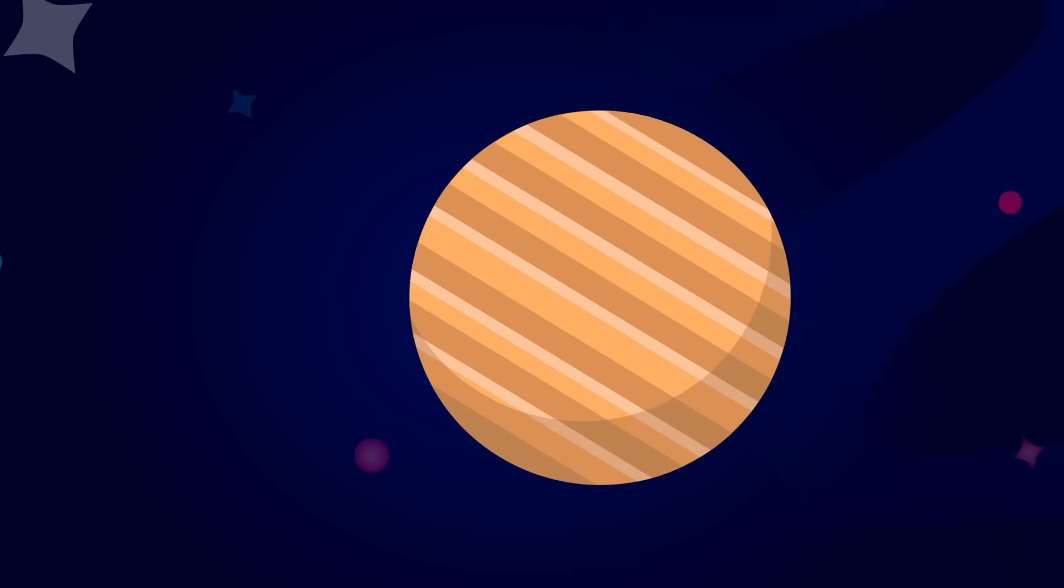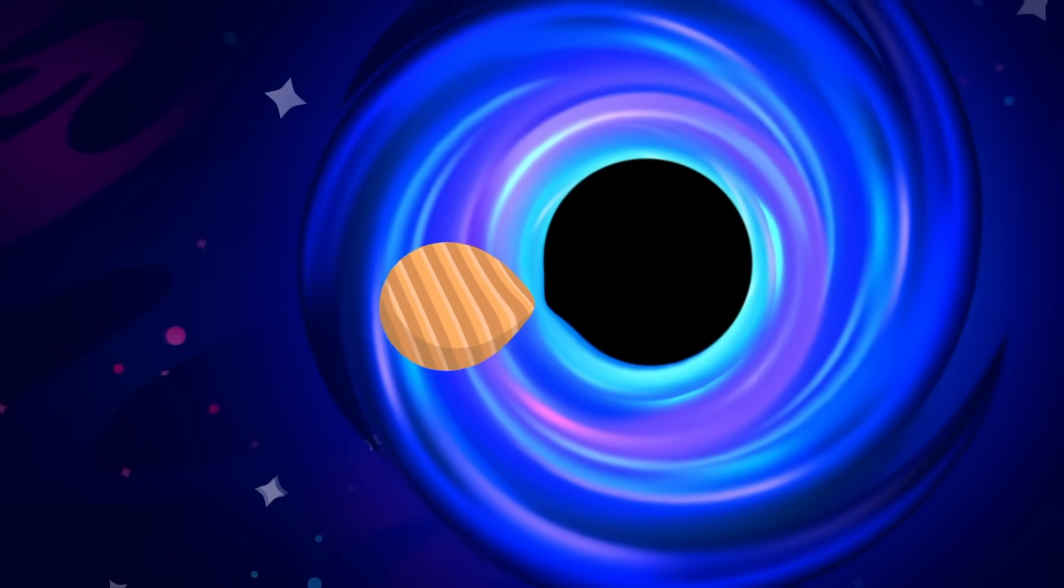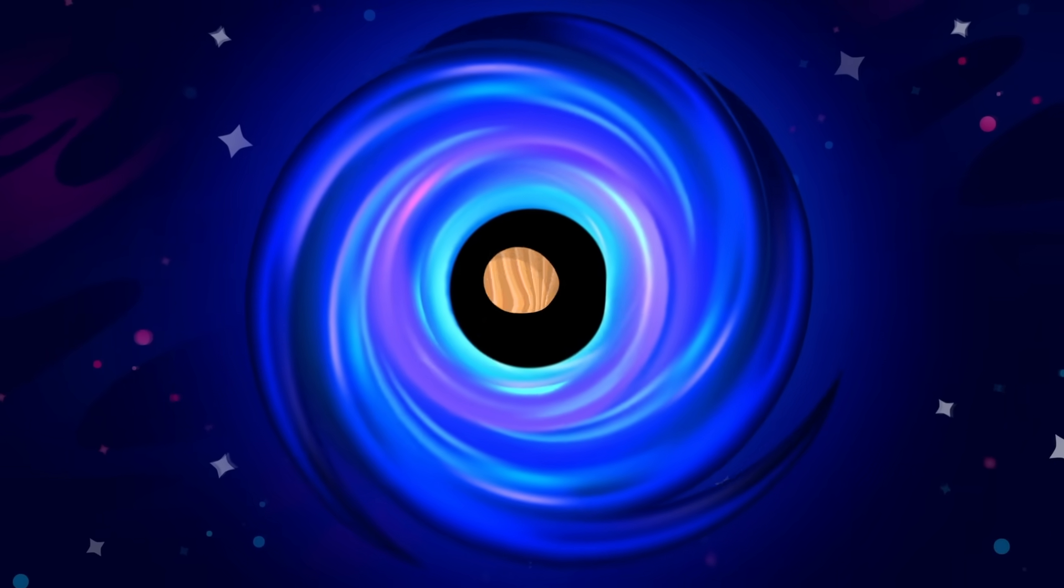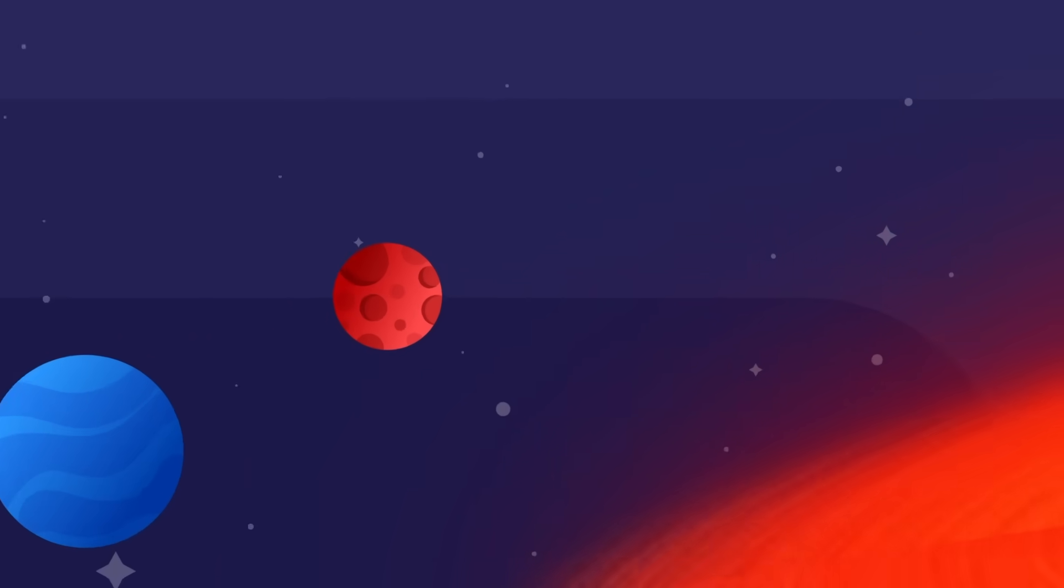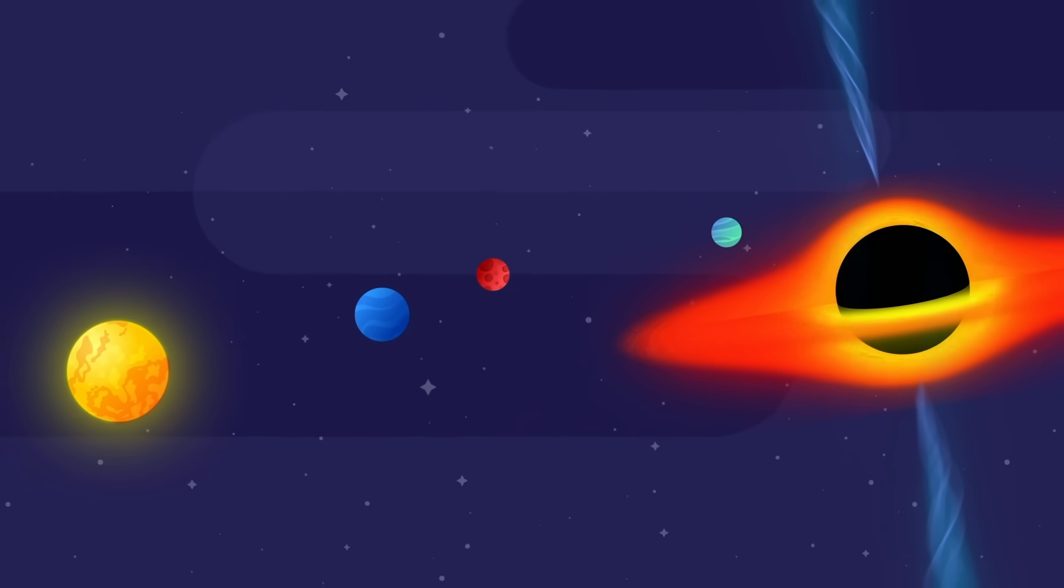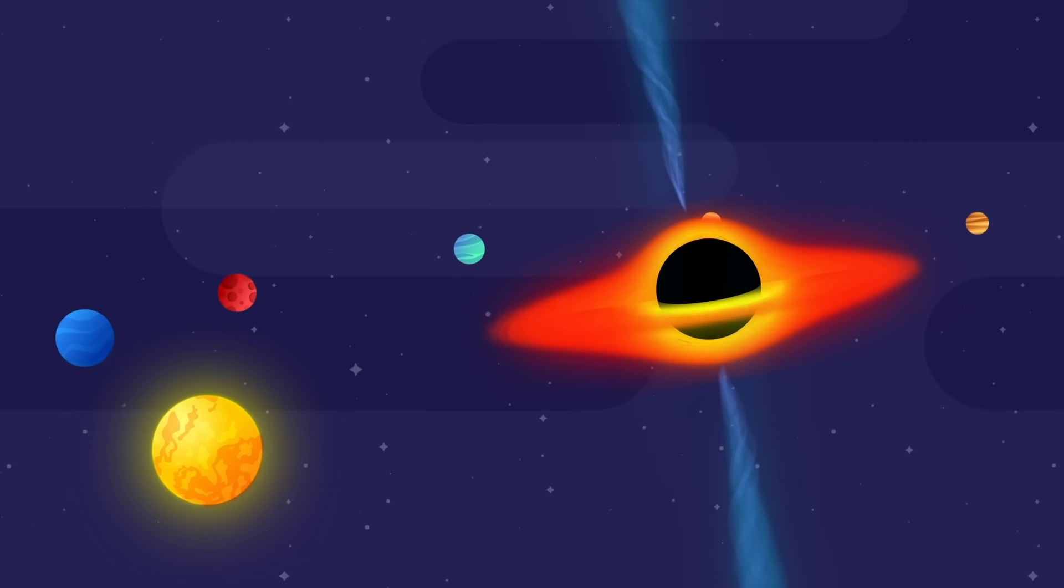The common misconception is that black holes suck in everything around them, when the truth is they don't actually pull in any matter. It's only matter that crosses their event horizon that gets sucked in. You could orbit around a black hole perfectly safely in an established orbit that was right outside the event horizon for billions of years.